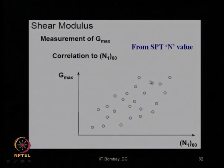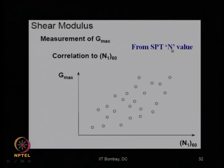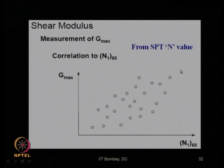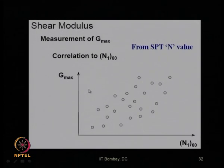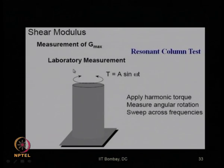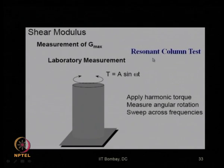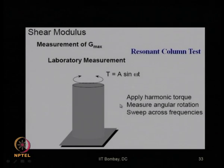From SPT, the N value is observed at the site and corrected to obtain N₁₆₀, as discussed in the Soil Dynamics course module 4. One can find a correlation between G_max and N₁₆₀ by plotting collected data points to obtain a relationship between this dynamic property and the static property. In the laboratory, using the resonant column test, G_max can also be found.